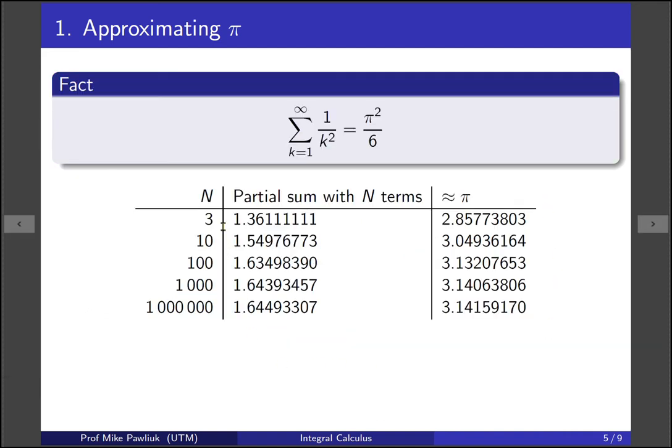So here's a table of data where I've taken various numbers of terms: 3, 10, 100, 1000, or a million. Here's the partial sum, which will approximate pi squared over 6. And then once we multiply by 6 and take a square root, it gives us an approximation for pi. So if you take three terms, it's approximately 2.8. With 10 terms, it's 3.0, so the ones digit is correct but everything else is wrong. If you take 100 terms, it's 3.1 something, so the first digit is correct. Take 1000 terms, the first two digits are correct. And if you jump all the way to a million, we have 3.14159, which is correct, and then the rest is incorrect. So if you want to get five decimal places correct, you need to take a million terms. That's a lot of terms.